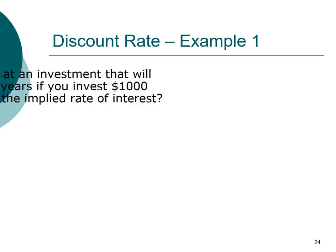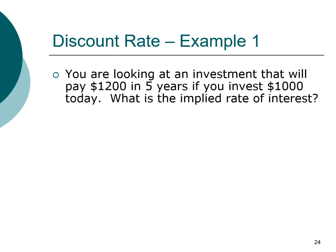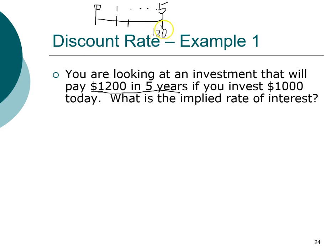Let's look at an example. Say you have an option to invest, and the investment will pay twelve hundred dollars in five years and will cost you one thousand dollars today. What is the implied rate of return on this investment? Let's put all this information on a timeline. The investment horizon is five years, so twelve hundred dollars goes at year five, and one thousand dollars is today.